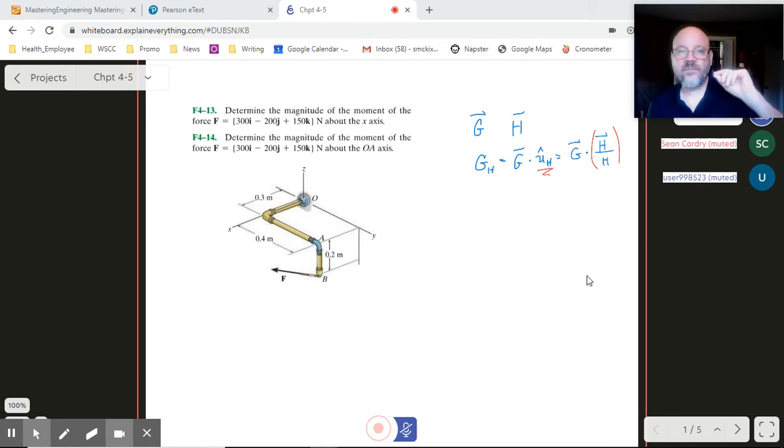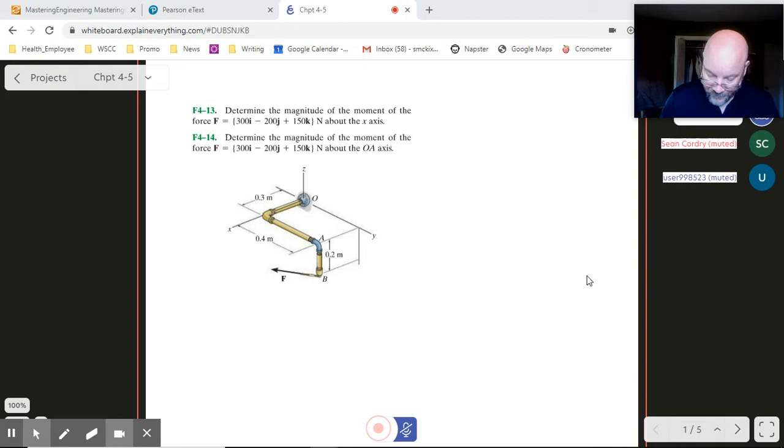So what we'll be doing here is we're going to find the moment, and then whenever we get that moment, we're going to use our dot product to find specifically how much of that moment is in a particular direction. So let's get after it. Look at number 13 there. It says, determine the magnitude of the moment of the force F about the x-axis.